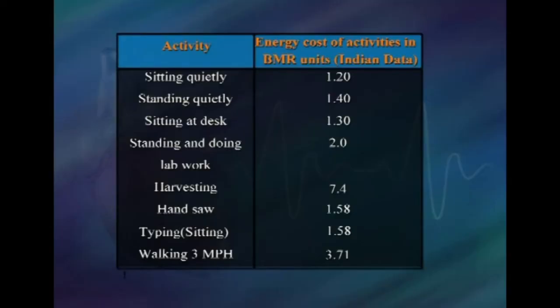The energy cost of common activities in terms of BMR units: sitting quietly = 1.2 BMR units; standing quietly = 1.4; sitting at desk = 1.3; standing and doing lab work = 2.0; harvesting = 7.4; typing while sitting = 1.58; walking at 3 miles per hour = 3.71 BMR units.